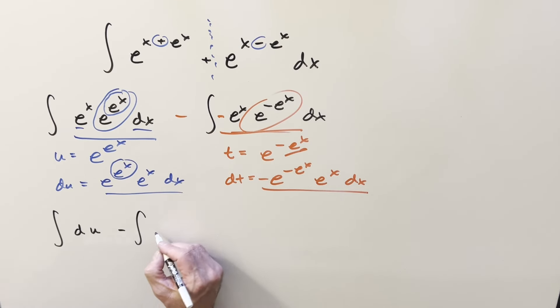So then for our second integral, we have just minus dt. So for our actual integration here, it's going to be very simple. We integrate du, we get u. We integrate dt, we get a t.